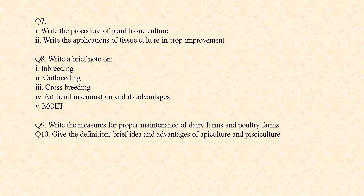Write a brief note on inbreeding, outbreeding, and crossbreeding. Then artificial insemination and its advantages. Next, MOET — Multiple Ovulation Embryo Transfer Technology. Write the measures for proper maintenance of dairy farms and poultry farms. Lastly, give the definition, brief idea, and advantages of apiculture and pisciculture.